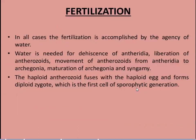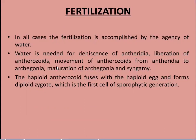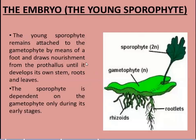Fertilization requires water. Water is essential so that antheridia release sperm and anthrozoids mature to reach the archegonia. Haploid anthrozoids fuse with the egg to form a diploid zygote, beginning the sporophytic generation. The very first stage is the embryo, and the young sporophyte remains attached to the gametophyte.